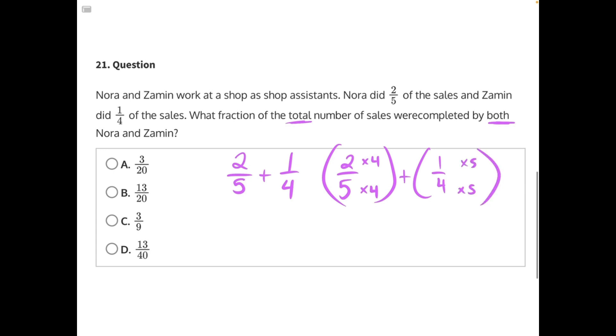So that way we will get the equivalent fractions of 8 over 20 plus 5 over 20. And now that we have common denominators, we can add 8 plus 5 gives us 13 over 20, making B our correct answer.